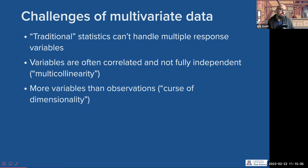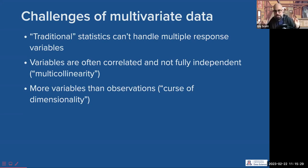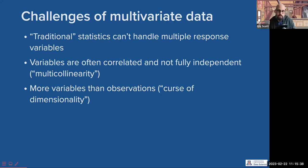We also often encounter the situation where there are more variables than observations. A lot of people think: wow, I've got this amazing big data set, it's going to have so much statistical power. But actually they have many, many variables and few observations. That's actually a challenge, not a strength of that data set. This is sometimes called the curse of dimensionality — the more variables you have, the more observations you need to pull information out of that.